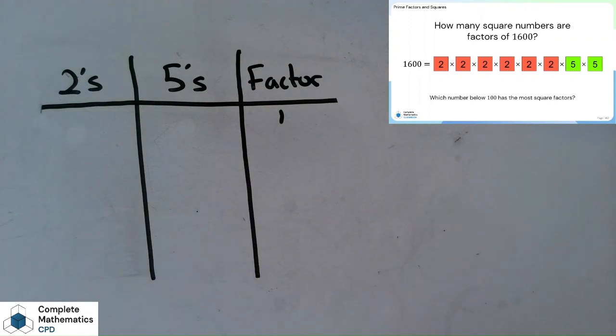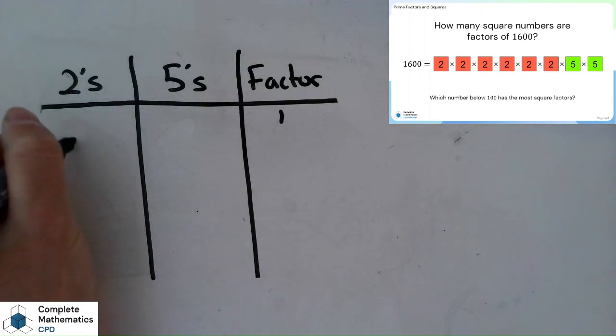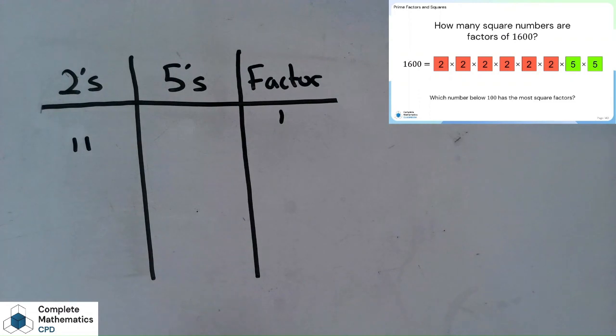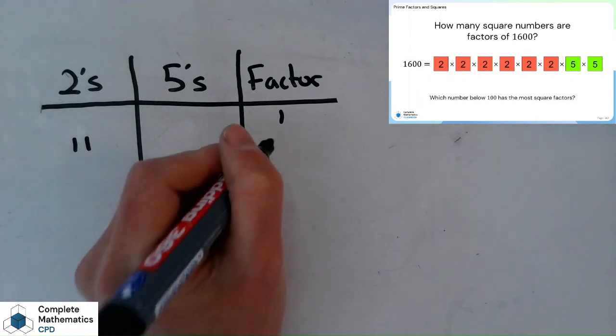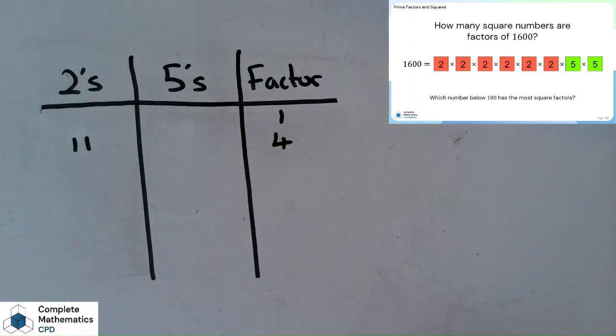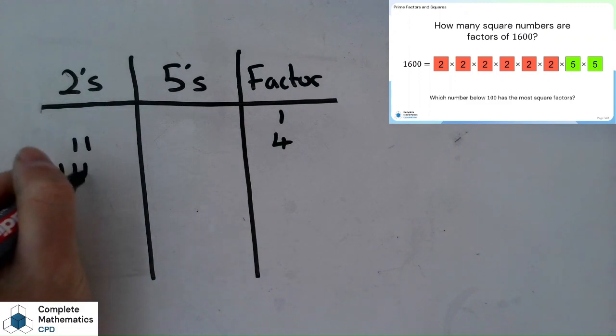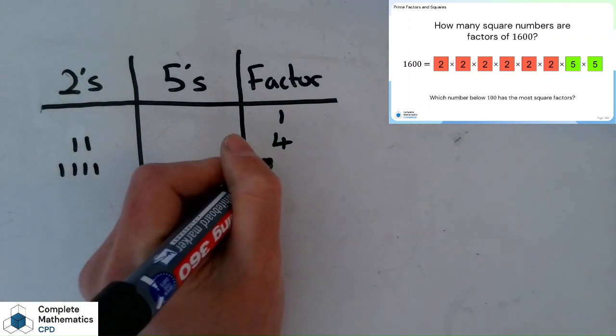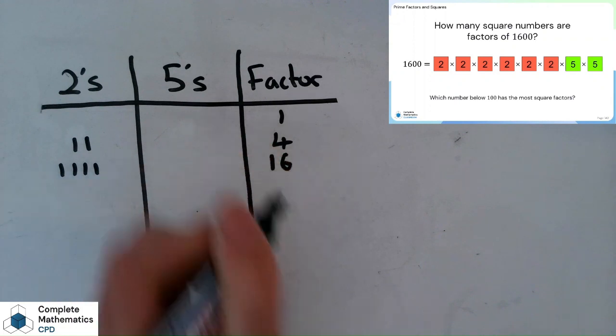Let's build them up now. If I have 2 2s as my prime factors, that gives me 2 times 2 which is 4. What if I have 4 2s? Another even number: 1, 2, 3, 4. That gives me a square factor of 16.